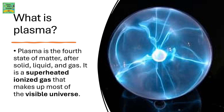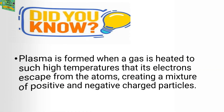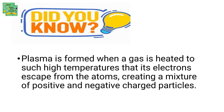What is plasma? Plasma is the fourth state of matter after solid, liquid and gas. It is a superheated ionized gas that makes up most of the visible universe. Plasma is formed when a gas is heated to such high temperatures that its electrons escape from the atoms, creating a mixture of positive and negative charged particles.